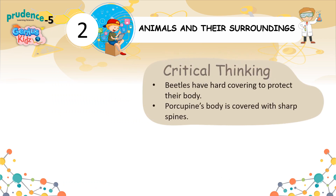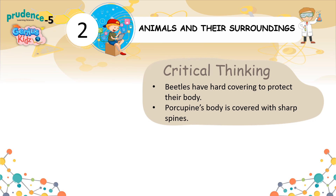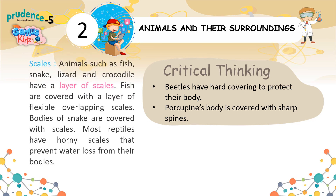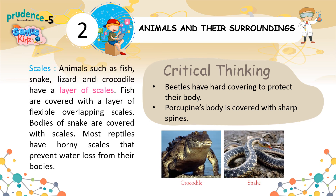Critical Thinking: Beetles have a hard covering to protect their body. Porcupines' bodies are covered with sharp spines. Scales: Animals such as fish, snake, lizard, and crocodile have a layer of scales. Fish are covered with a layer of flexible overlapping scales. The bodies of snakes are covered with scales. Most reptiles have horny scales that prevent water loss from their bodies.